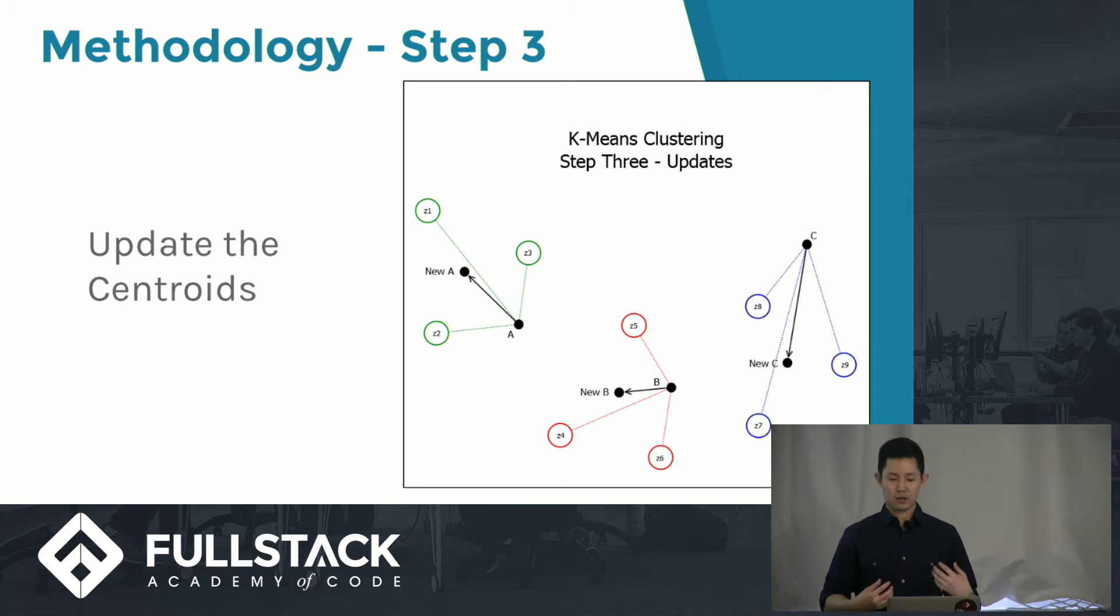The centroid is basically the mean of all the data points associated with that cluster. You can see that for A, it shifted over. B shifted over, and C shifted over to be the centroid of those data points.